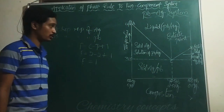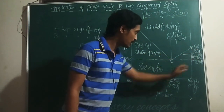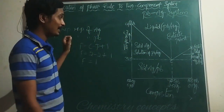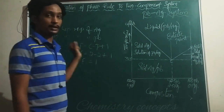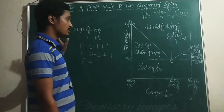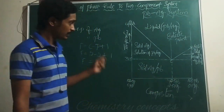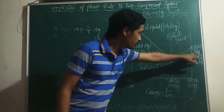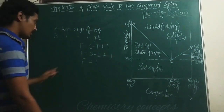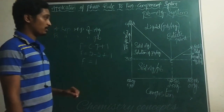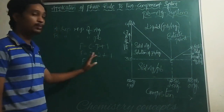Point B represents the melting point of lead. The BC curve represents what happens upon addition of silver to lead — it lowers the melting point. Along the BC curve, two phases are in equilibrium: solid Pb and a solution of Ag in Pb. Here also F = 1, so it is a monovariant system.